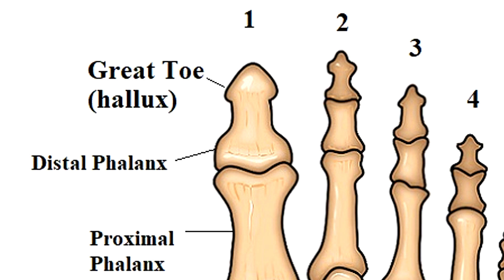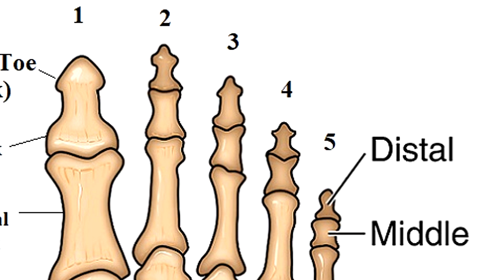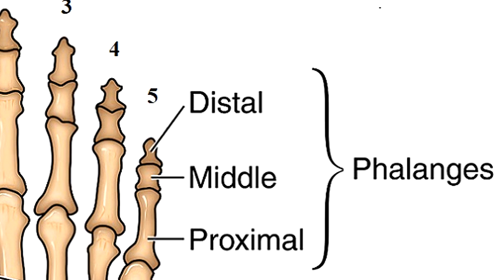Your toes, also called digits, are numbered one through five just like your fingers. The great toe is digit one, the long toe is digit two, middle toe digit three, ring toe digit four, and the pinky toe is digit five. The phalanges are named after directional terms — the distal phalanx is furthest from the ankle. A helpful mnemonic: a pistol is distal to the upper arm. The middle phalanx is called middle, and the phalanx closest to the metatarsal is the proximal phalanx.